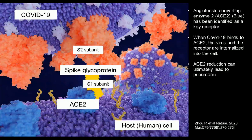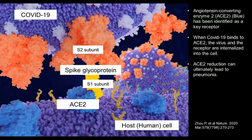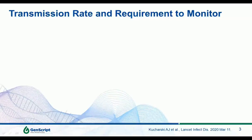The spike glycoprotein contains two subunits: the S1 subunit, which is the unit that binds to ACE2, and the S2 subunit. These are important when we talk about detection of the virus, and we'll discuss this in the coming slides.